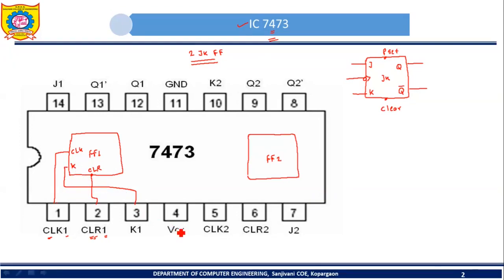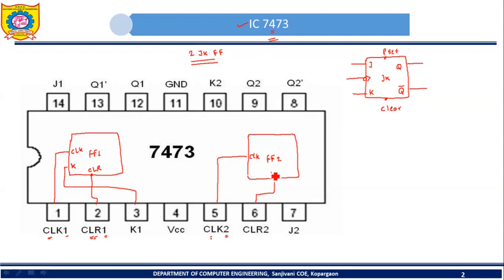Pin number 4 will act as VCC, so pin number 4 should be connected to VCC. Pin number 5 will act as clock for flip-flop 2 — you can provide clock to the second JK flip-flop using pin number 5. Pin number 6 will act as clear input for flip-flop 2.